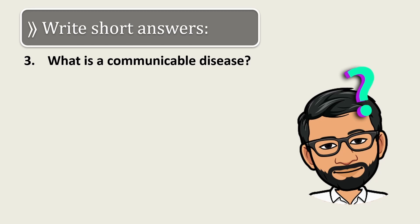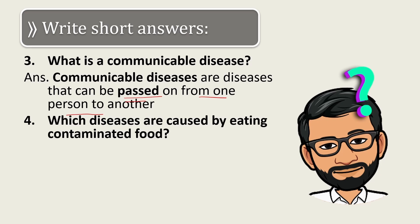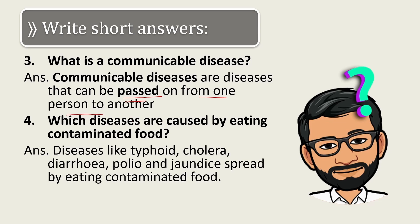Third question: what is a communicable disease? Communicable diseases are diseases that can be passed from one person to another. Fourth question: which diseases are caused by eating contaminated food? Diseases like typhoid, cholera, diarrhea, polio, and jaundice spread by eating contaminated food.